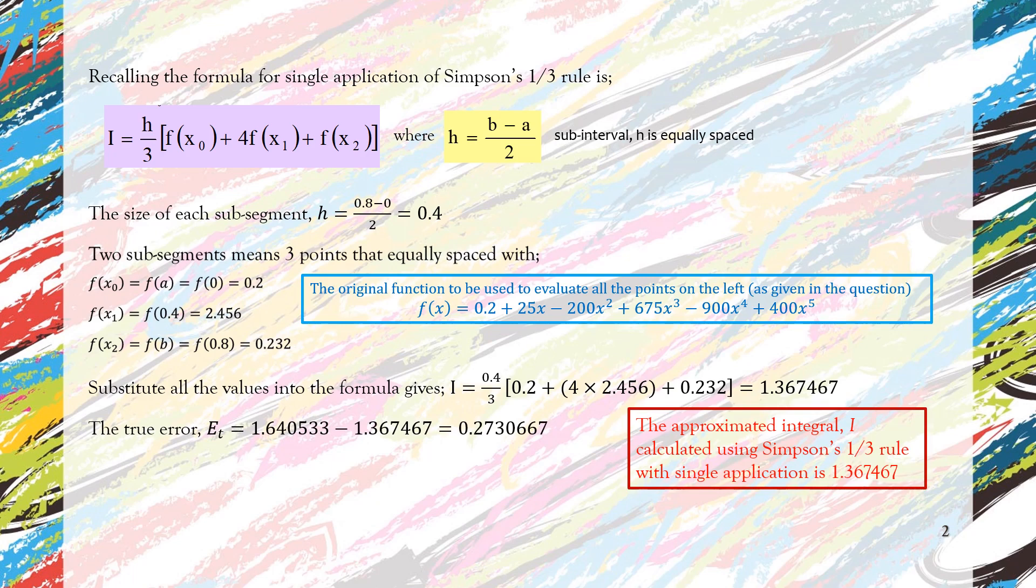We can also calculate the true error, which is quite small compared to the trapezoidal rule method, whether single or multiple application. The percentage true error is 16.6 percent.